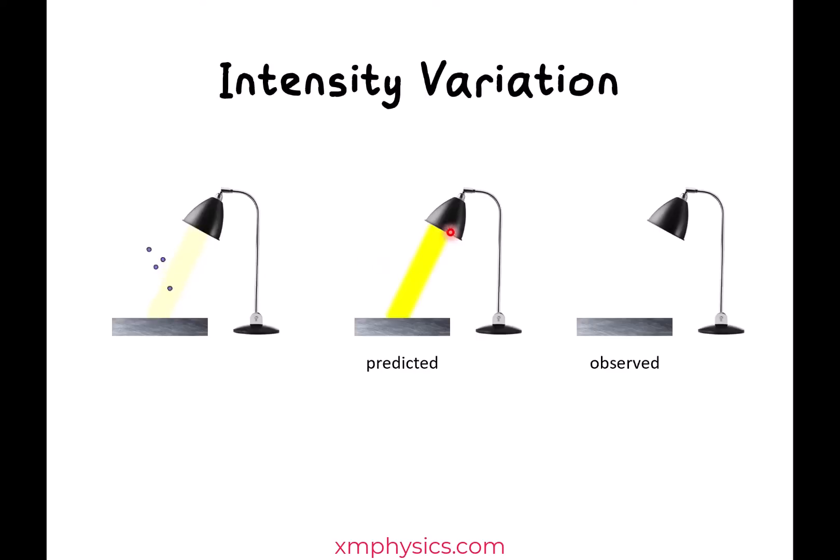So if we use a brighter beam, more intense beam, what should happen is more photoelectrons emitted per unit time and also higher KE max. The higher KE max is represented by the photoelectrons being able to jump to a higher height. Okay, so what were the actual observations?